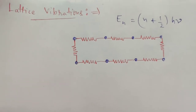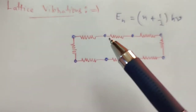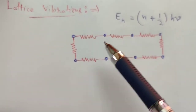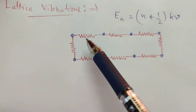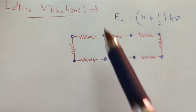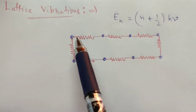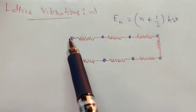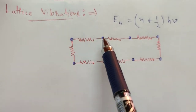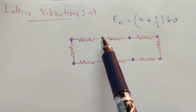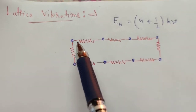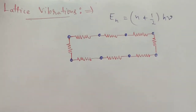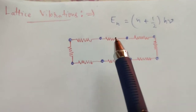Since these atoms vibrate at their mean positions, for simplicity we consider them connected to each other by elastic springs. When they are attached by springs, the system becomes a coupled system — if one atom oscillates, it also affects its nearest neighbor atoms. Thus the whole crystal vibrates.